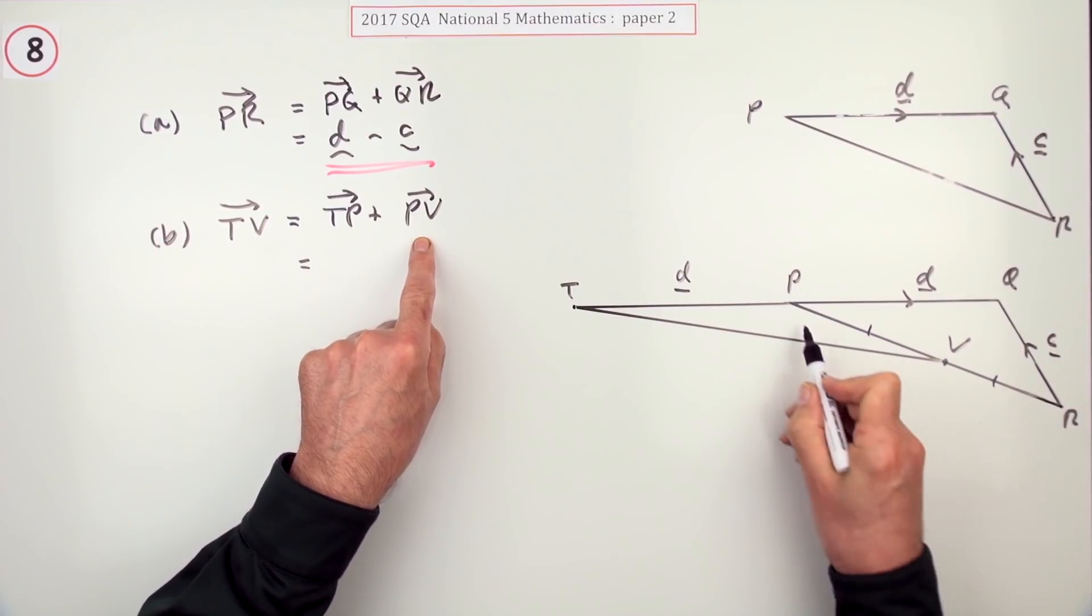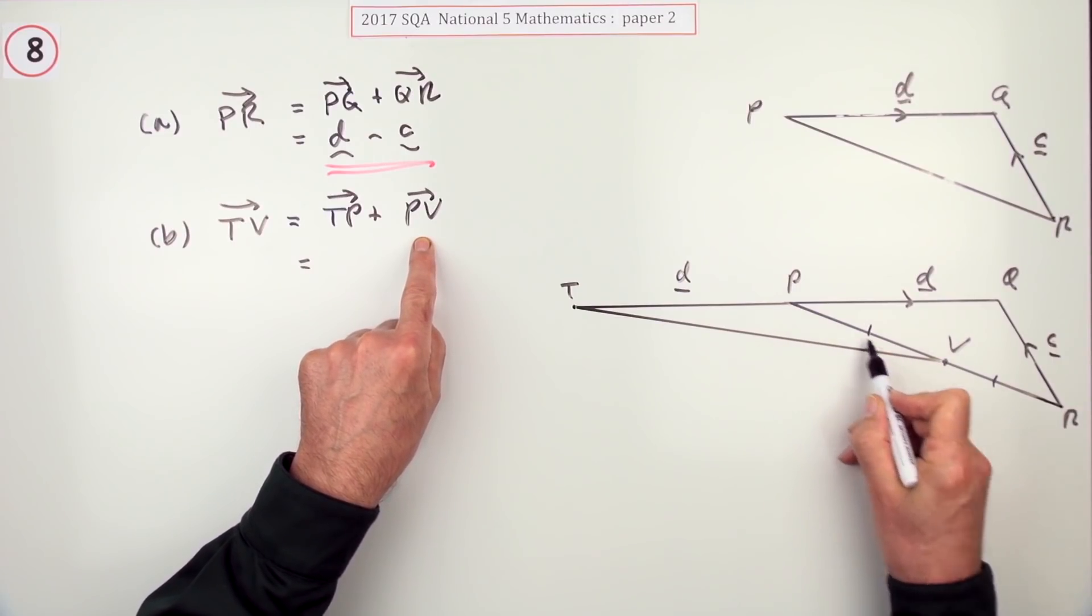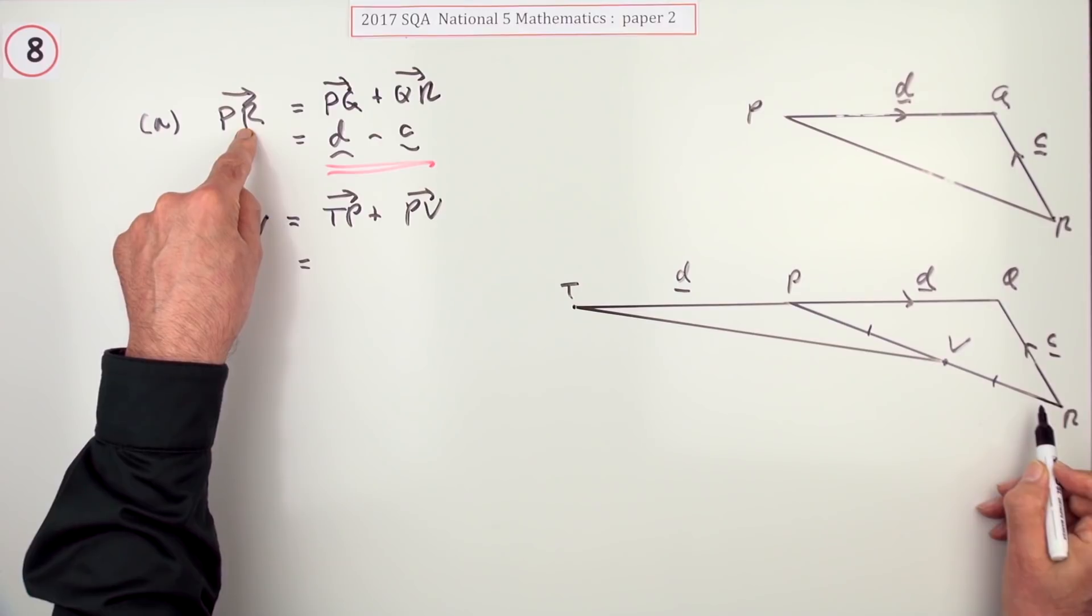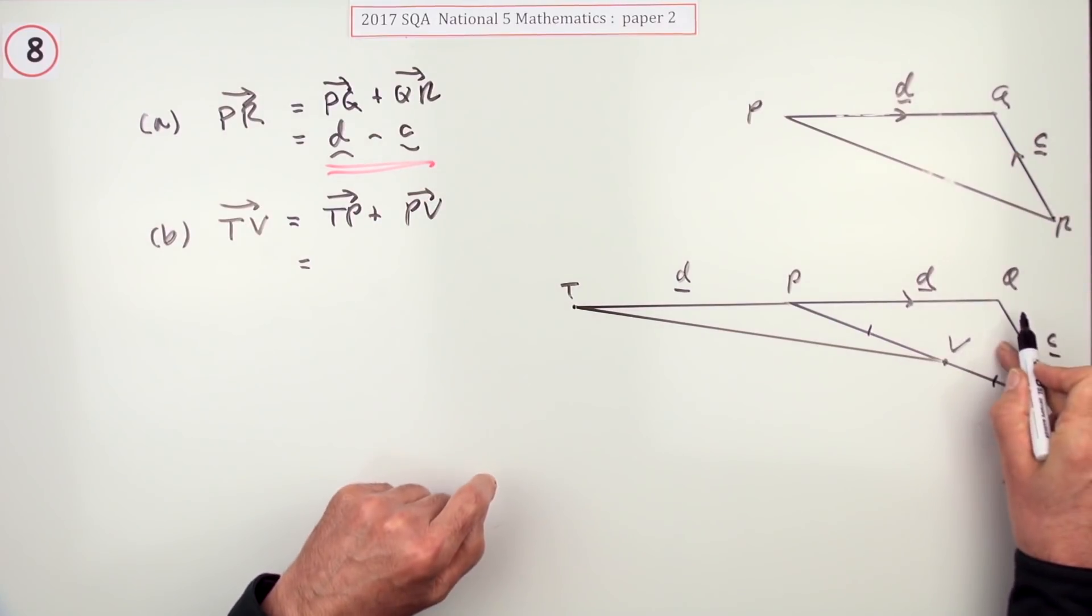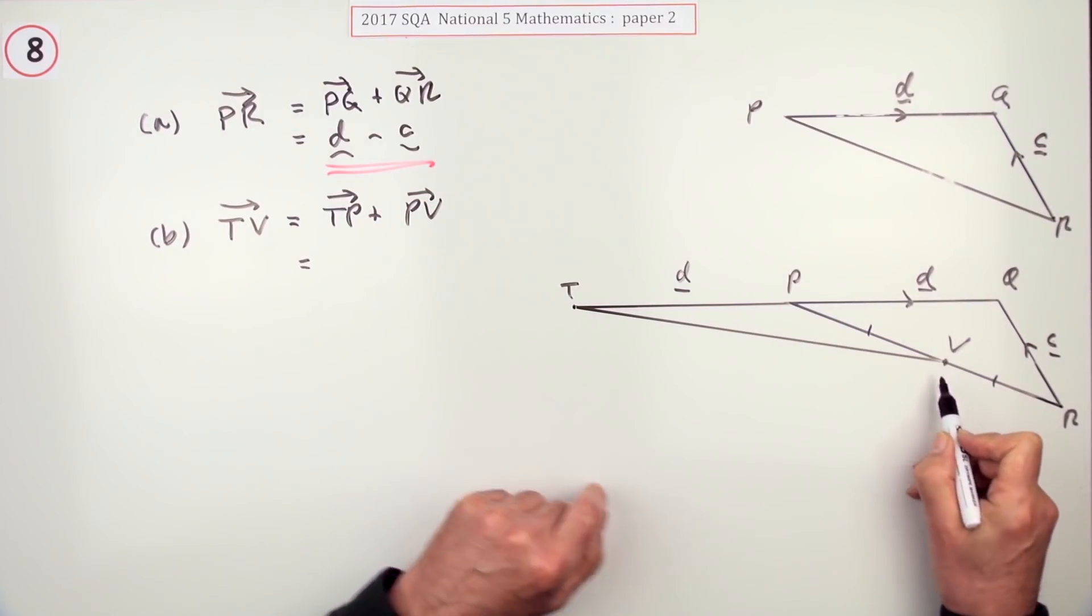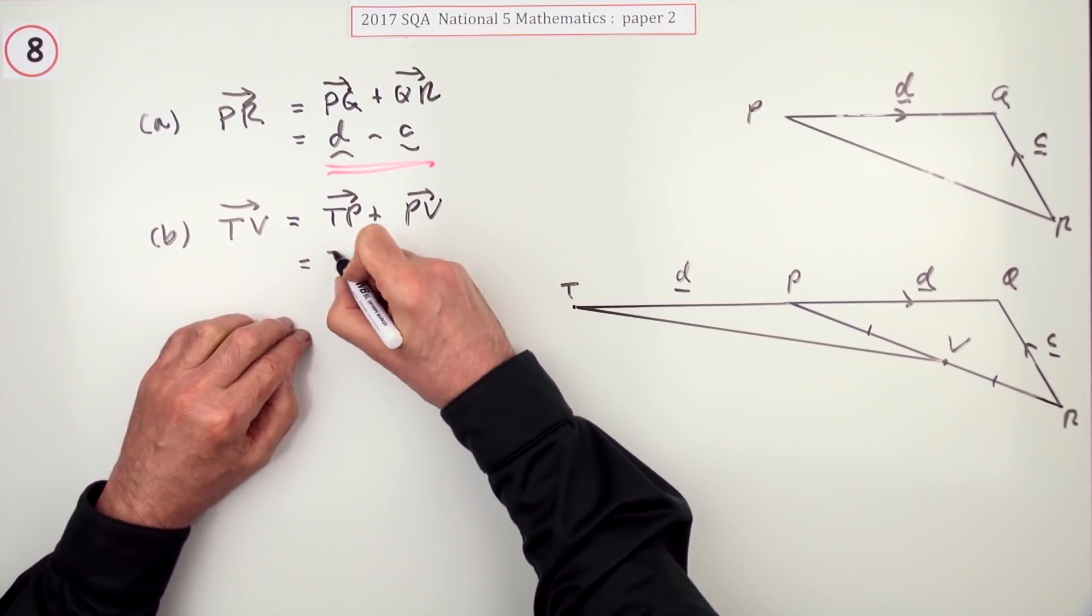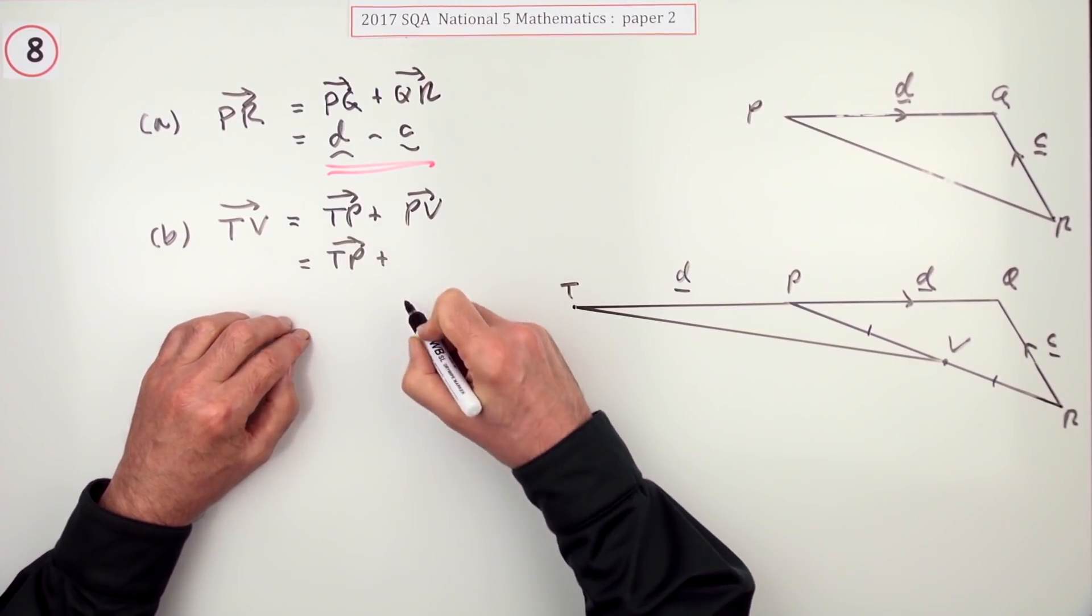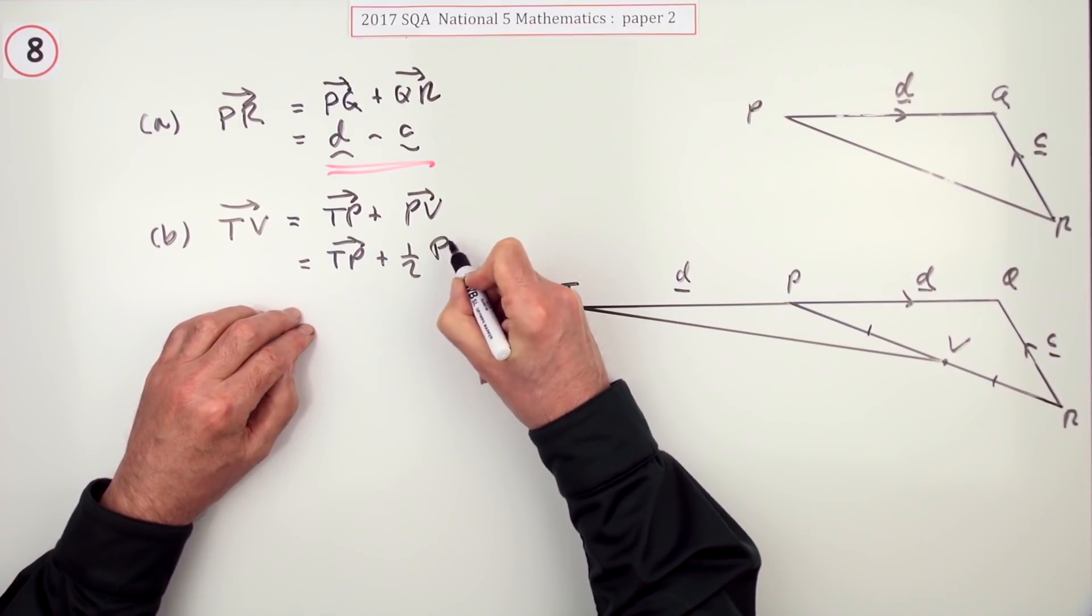Now P to V, even though it doesn't look as if I know it straight away, is part of PR. And I already know PR. PV since it's the middle is half of PR. I'll just write that again: I'll go from T to P and then I'll go halfway from P to R.